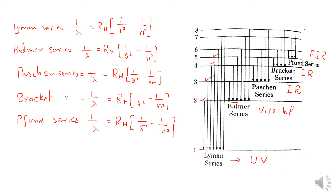یہ ہمارا basically spectroscopic introduction تھا۔ Next lecture میں ہم discuss کریں گے کہ بنیادی طور پر Bohr's atomic model — جو اس chapter کا main article ہے — اس کے basic postulates کیا ہیں اور Bohr's atomic model کے مختلف postulates کو ہم کس طرح mathematically derive کر سکتے ہیں۔ So next lecture میں ملتے ہیں، اللہ حافظ۔